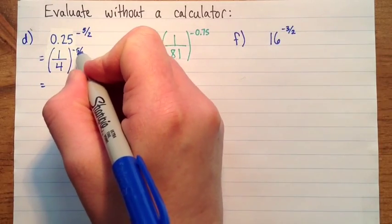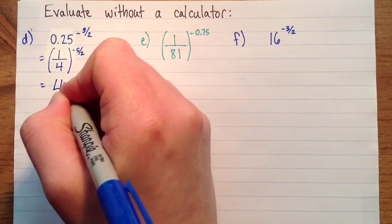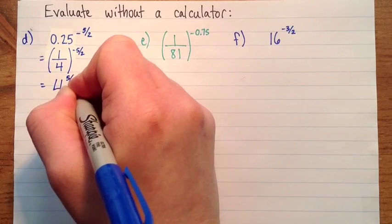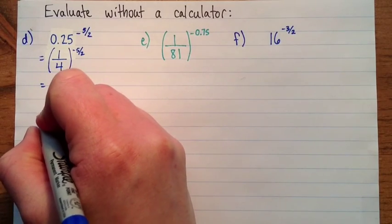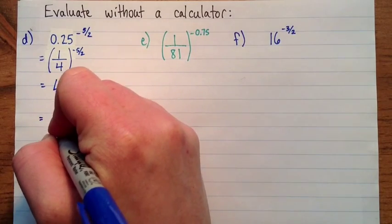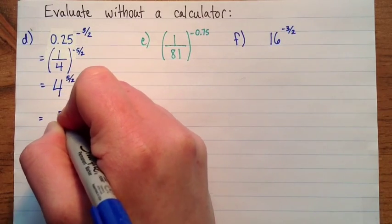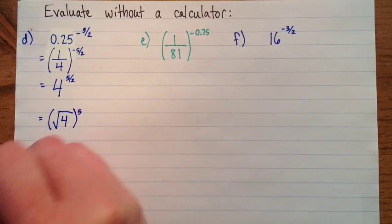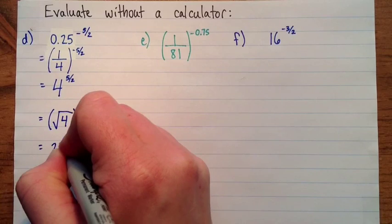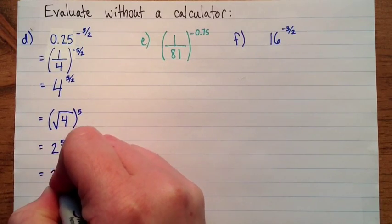So now I'm going to deal with the negative part of the exponent by taking the reciprocal of the base. So that's going to give me four to the exponent five over two. And if I write that as a radical, that's the square root, or the second root of four, to the exponent five, which is two to the exponent five, which is 32.